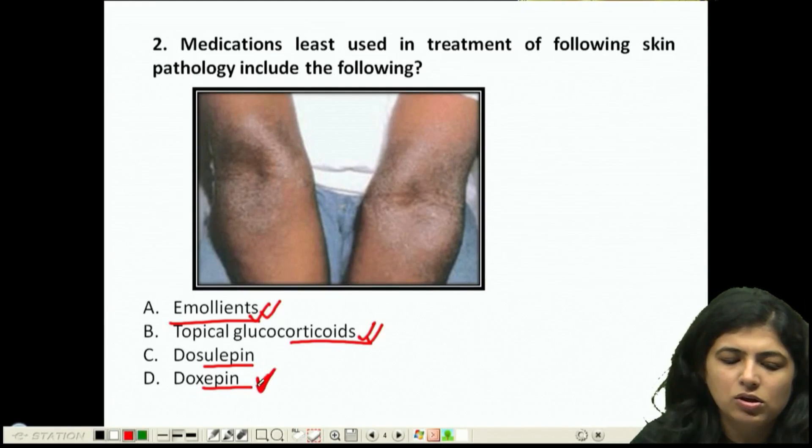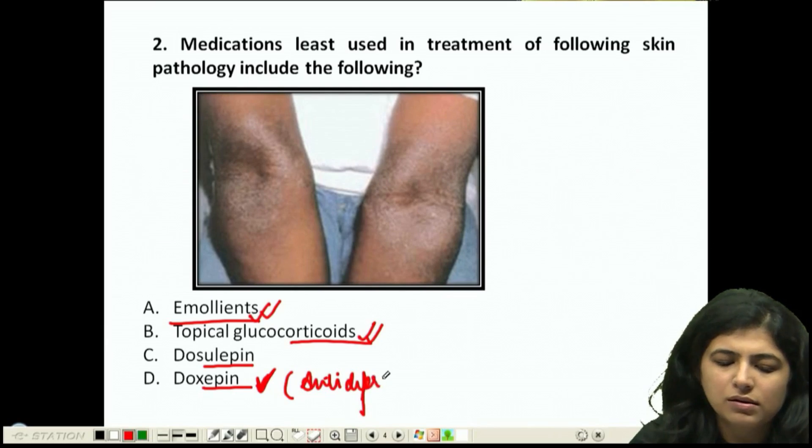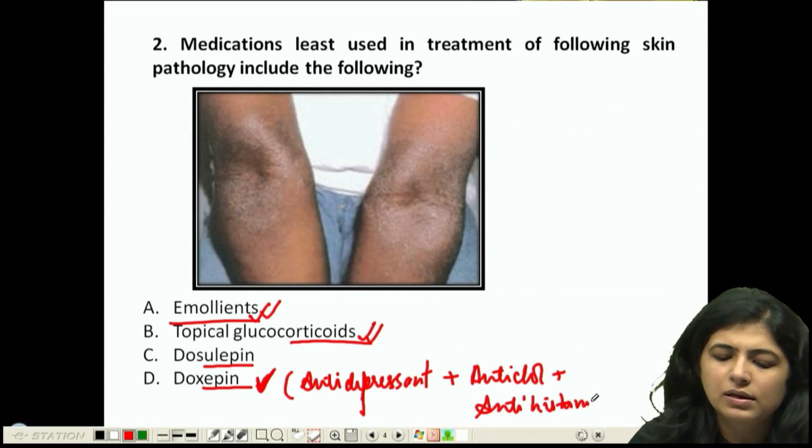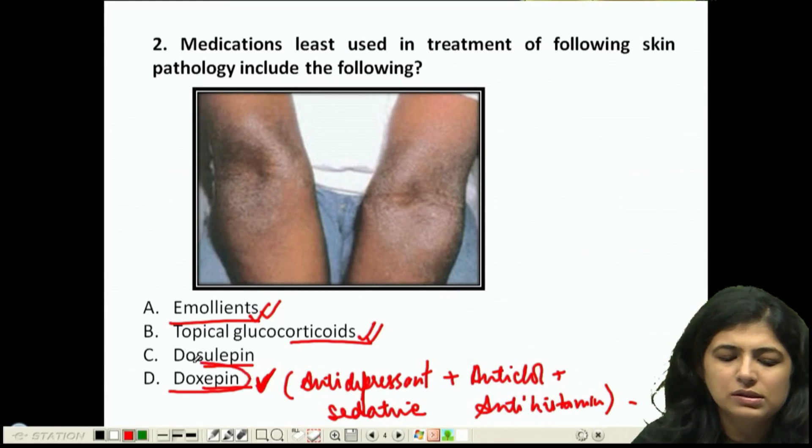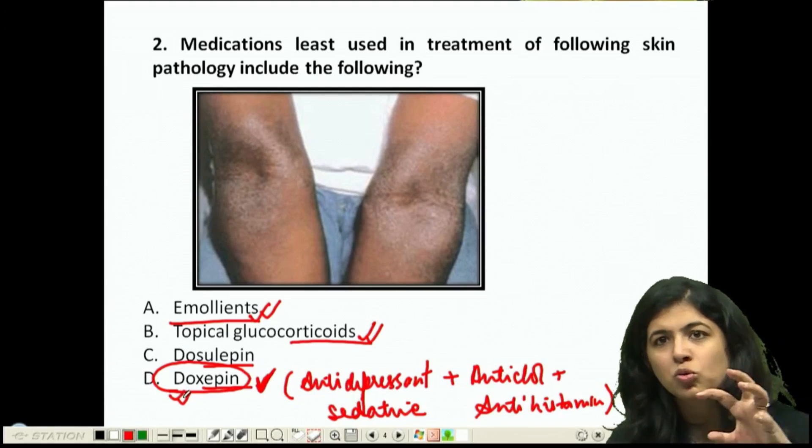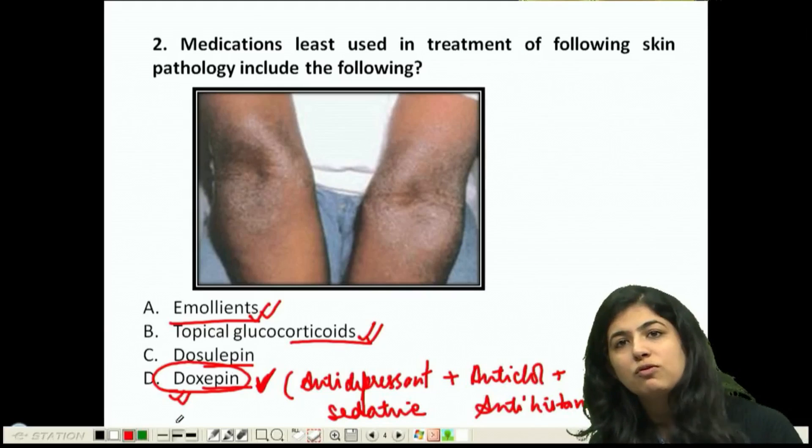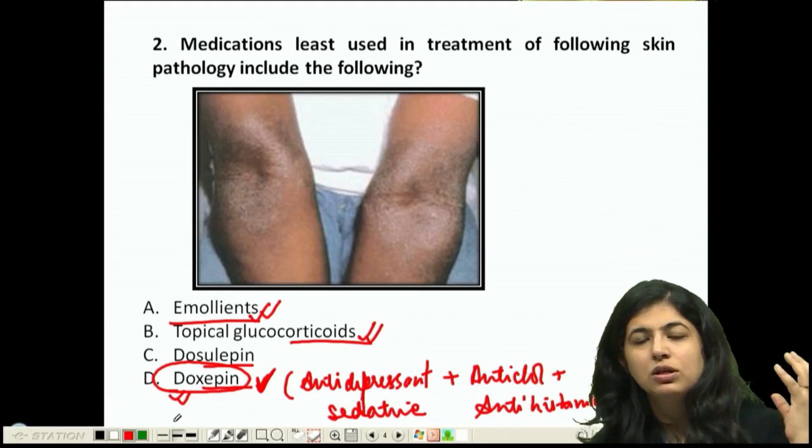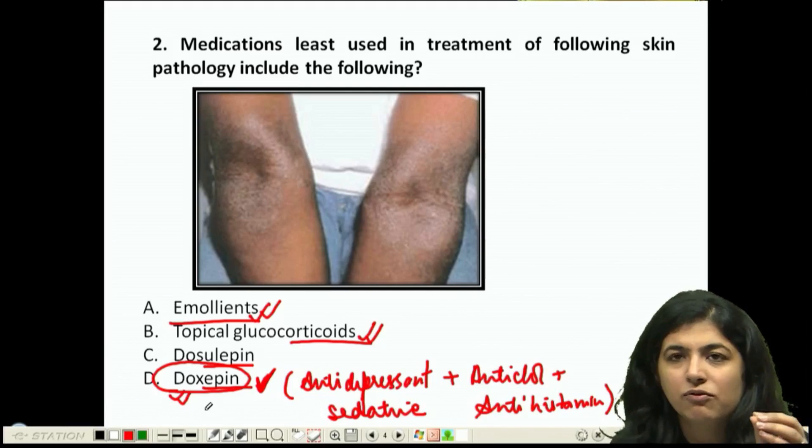Dosulepin and doxepin. Doxepin, yes - it's actually an antidepressant with anticholinergic and antihistaminergic action along with sedative action. This improves the itch plus allows the patient to sleep. So a doxepin tablet at night would be best for patients with severe itch. That's why we use this in chronic itchy disorders.